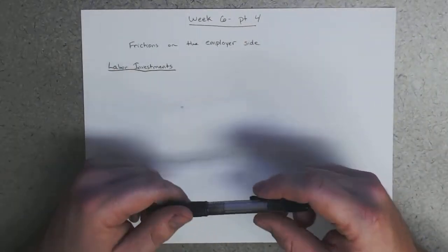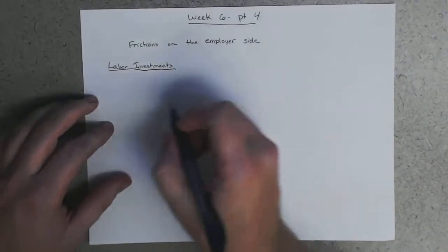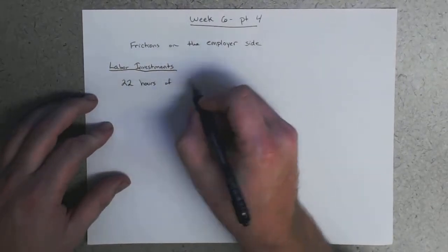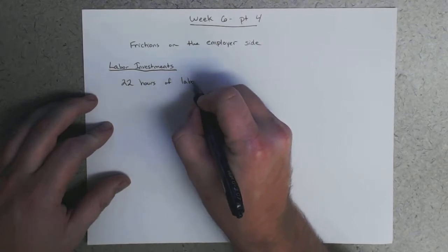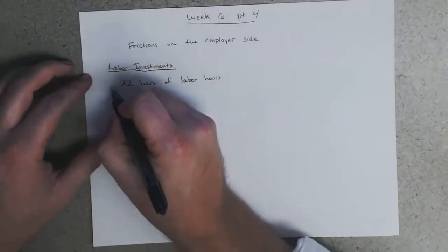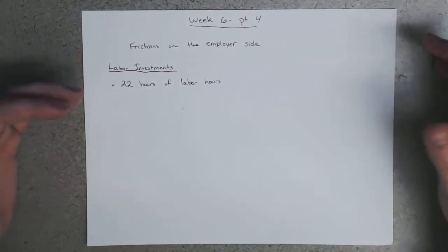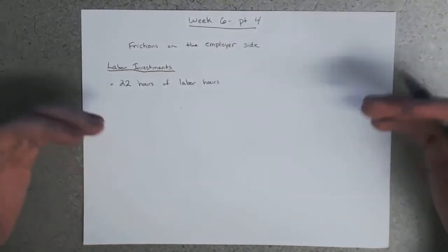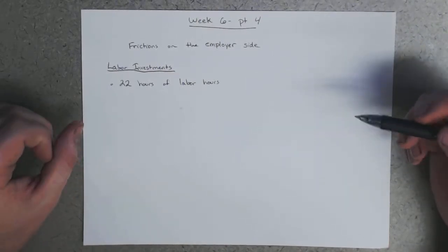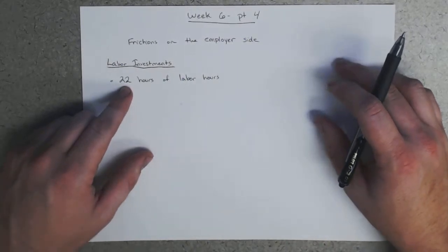And so to think about this, think about the case of hiring low-skill labor. It turns out this costs 22 hours of labor hours. Just the process of going through applications and going through employment history and calling references and all that. Just doing that to find just one more worker for a low-skilled work job or an entry-level job takes 22 hours of work on the part of the firm.